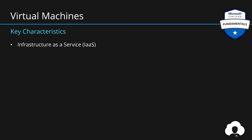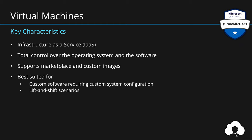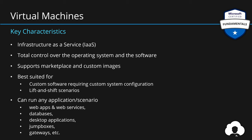Virtual machines are infrastructure as a service, meaning you are responsible for managing both the application platform and operating system configurations. Because of that, you have total control over the operating system and the software running on it. You have support for marketplace and also customer-provided images, so you can prepare your own images as a starting point containing your organizational setup out of the box. This service is best suited for custom software requiring custom system configuration, or lift-and-shift scenarios — moving your on-premise application to the cloud without a need to redesign. You can run pretty much any application: web applications, web services, databases, desktop applications, jump boxes, or data gateways.